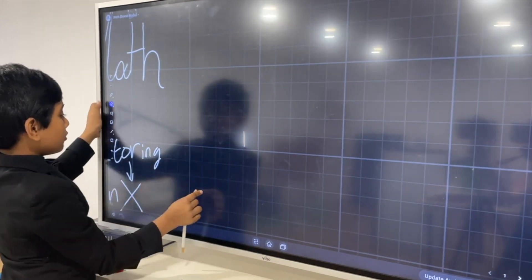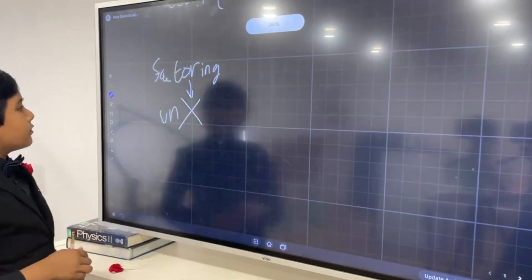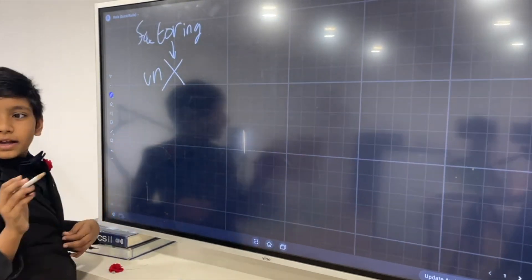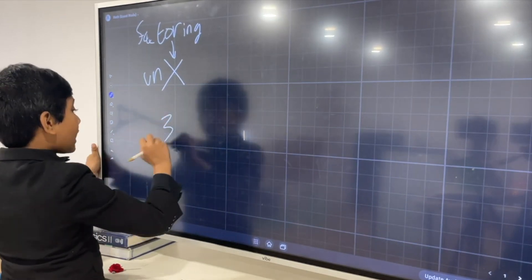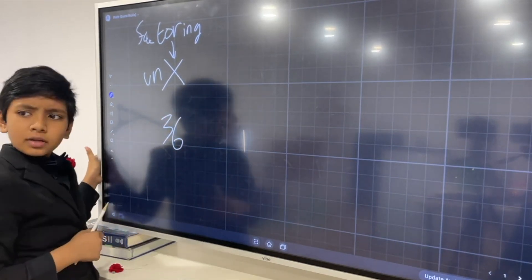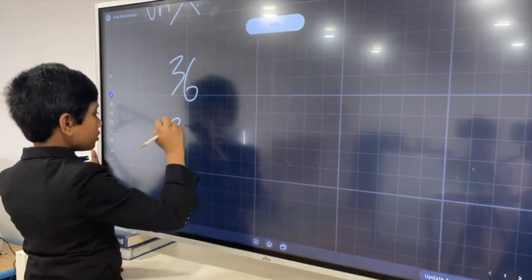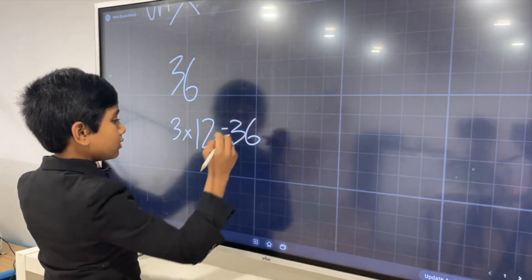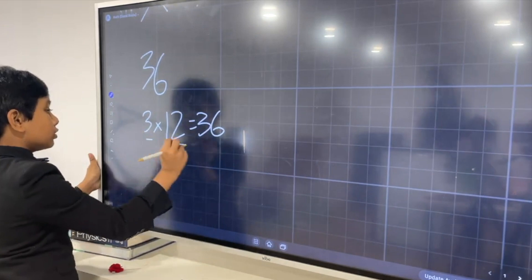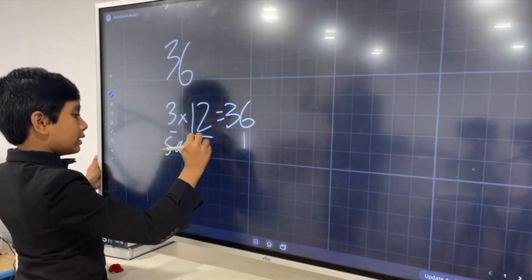So, we have factoring, which is kind of like unmultiplication. Let's say we have 36. Now, what numbers could make up 36? Well, we can say 3 times 12 is 36. So, these two are factors, and this is the product.